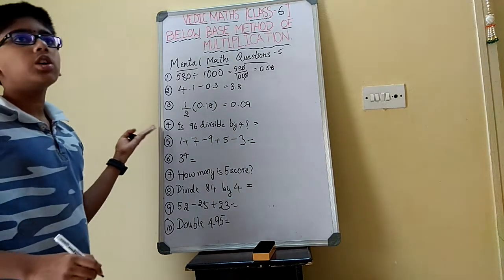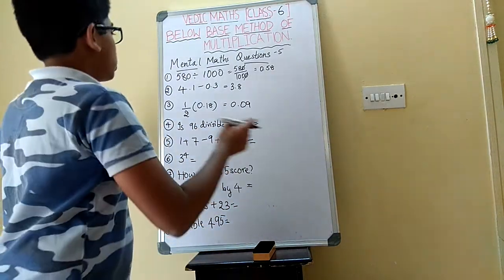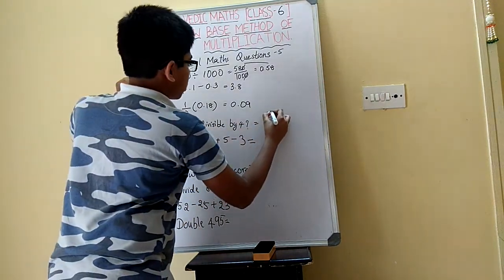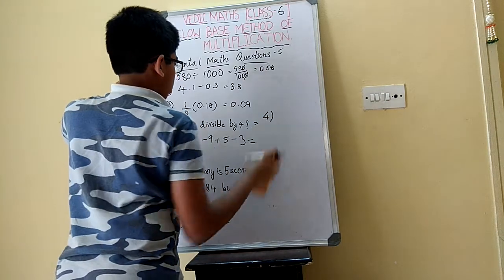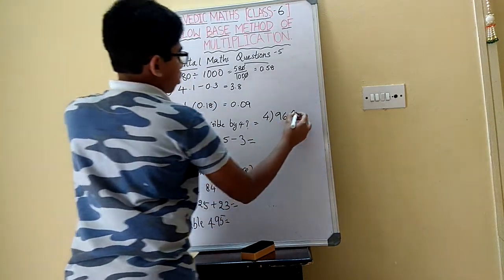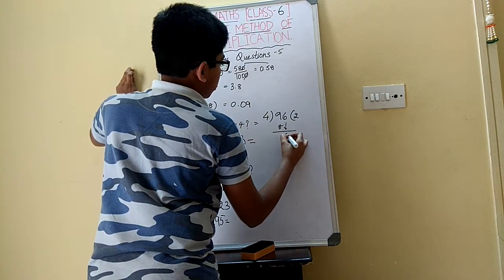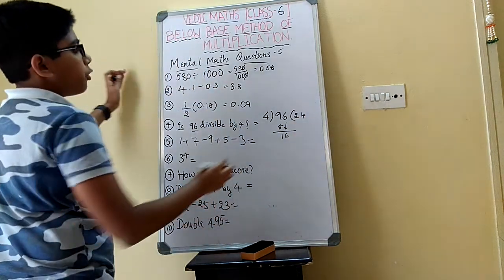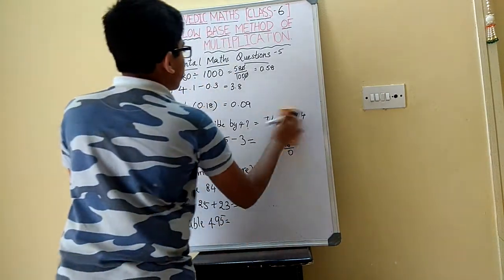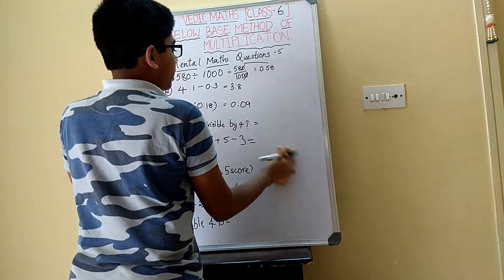I have already told you the divisibility rules, so I will do that method. I need to divide the last two digits by 4. 4 times 24 is 96, and 4 times 2 is 8. So it is completely divisible by 4. It is divisible by 4.